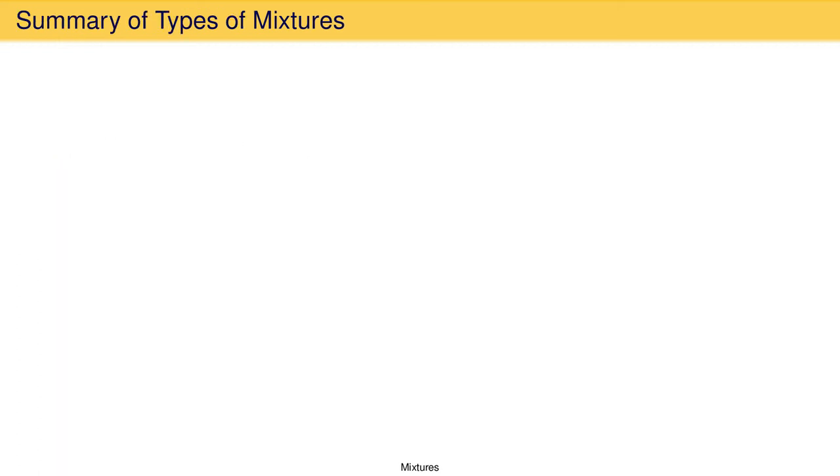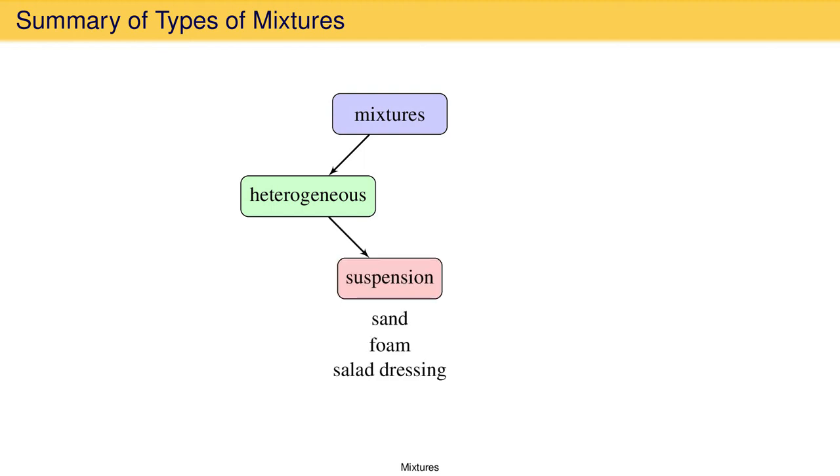It might help to summarize what we have talked about. Mixtures can be heterogeneous, in which there are boundaries between components of the mixture. If the boundaries between the components can be discerned with the human eye, the heterogeneous mixture is a suspension. Examples being sand, foam, and salad dressing.